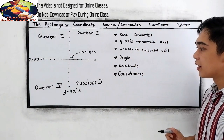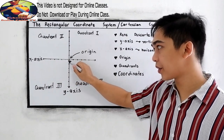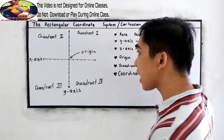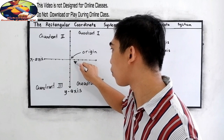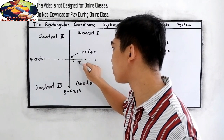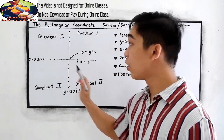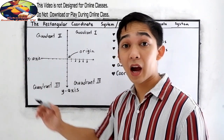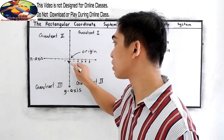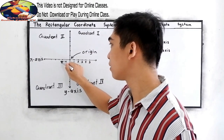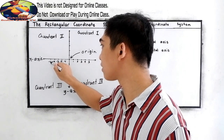Now, from our origin, we know that on a number line, if this is our zero, on the right side are the positive numbers: 1, 2, 3, 4, and 5. On the left side will be our negative numbers: negative 1, negative 2, negative 3, negative 4, and negative 5.